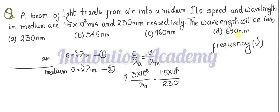The velocities are in meter per second and the wavelengths are in nanometer. The 10 to the power 8 cancels out, and 1.5 and 3 simplify — giving a factor of 2. Therefore, λ_a equals 460 nanometer.